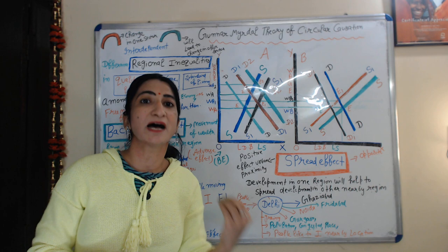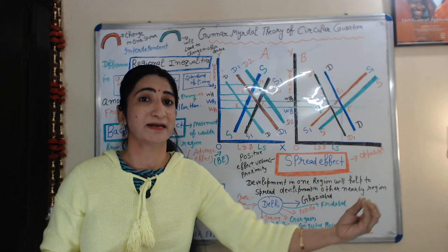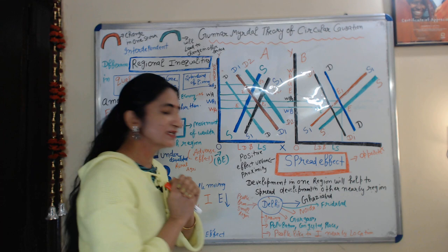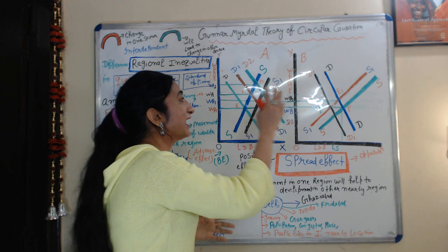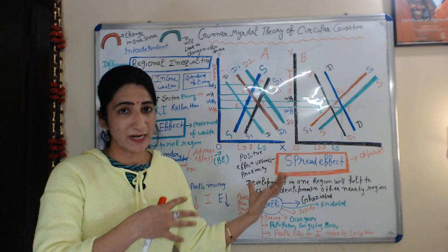When one region grows, other nearby regions also grow because of it. Development of one region spreads to other nearby regions — that is called the spread effect. Now we will understand the whole concept of this theory with the help of a diagram, where we will also discuss the backwash and spread effects.